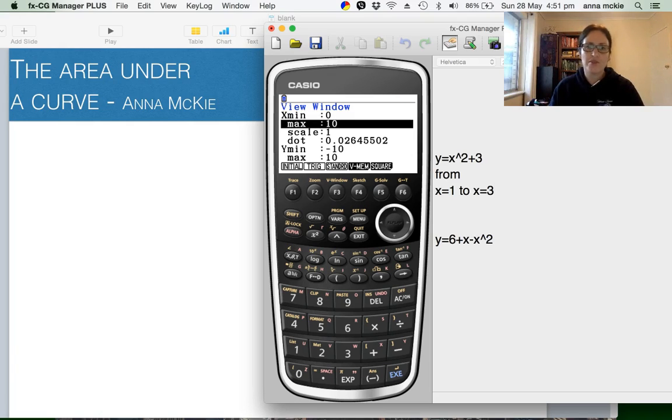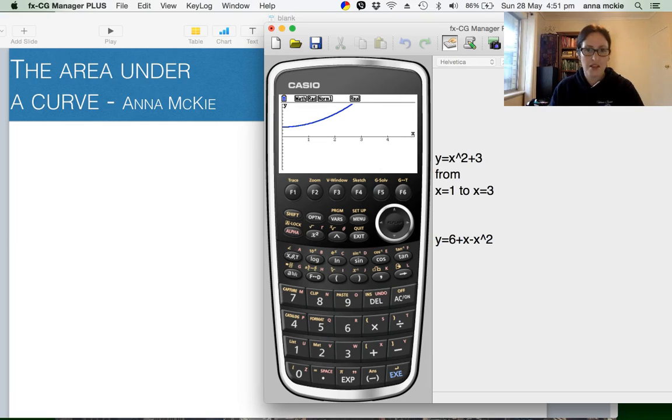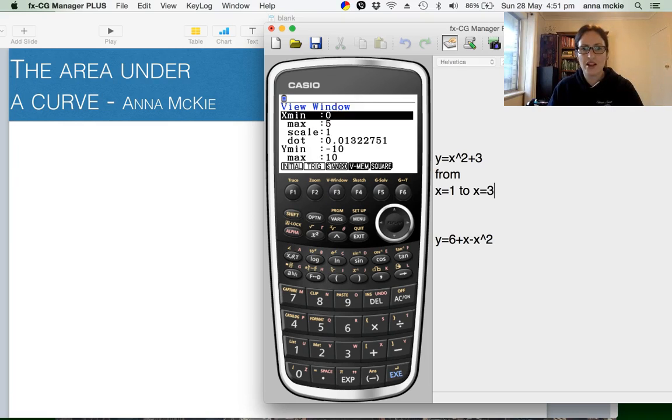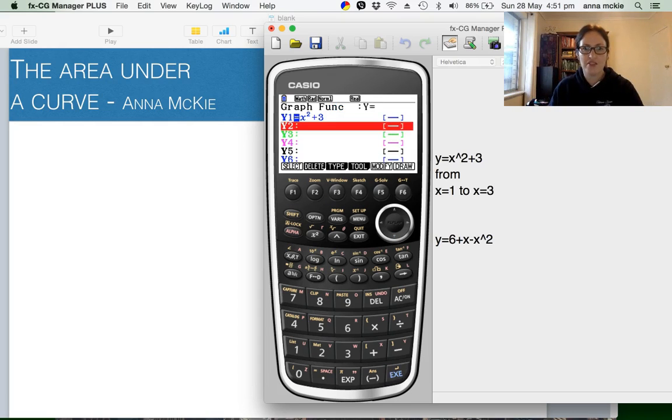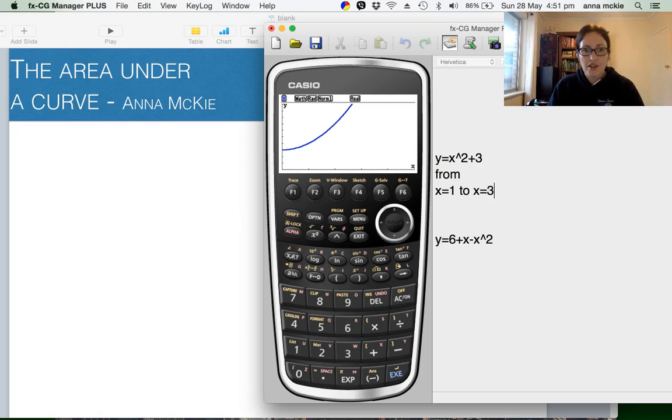For x, let's go from 0 to 5. You might have a look at what that looks like. That'll do, but I'm just going to adjust the y-axis, 0 to 10. Now let's calculate what it's going to be. Shift G solve the integral, lower limit 1, upper limit 3, and there we are.